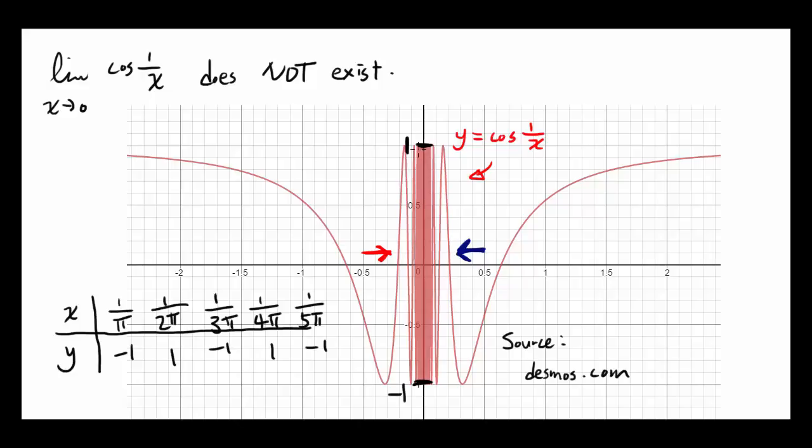It's going in between 1 and negative 1. It's going back and forth. And to think about why this is happening, you can try to plot some points.